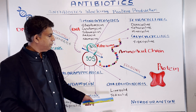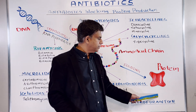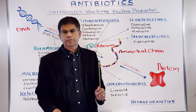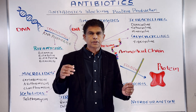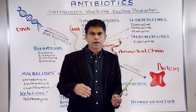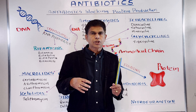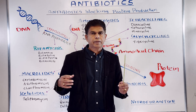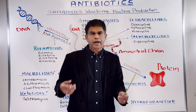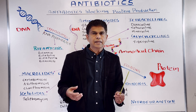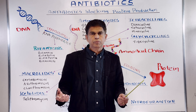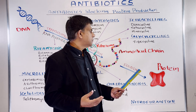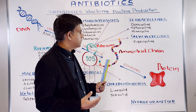Another group is nitrofurantoin, which is a little bit separate. What nitrofurantoin does is it goes into the cell, where flavoproteins break it down into reactive metabolites. These reactive metabolites then attack the DNA and the ribosomes — that's the way it works.